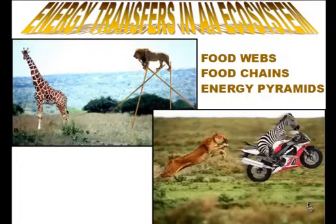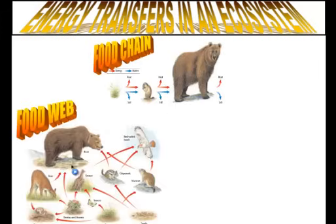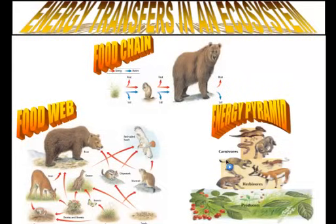Hi there boys and girls, welcome to our vodcast on energy transfers in the ecosystem. Energy transfers in an ecosystem can be represented in one of three ways: food chains, food webs, and energy pyramids. So let's take a look at these three representations.